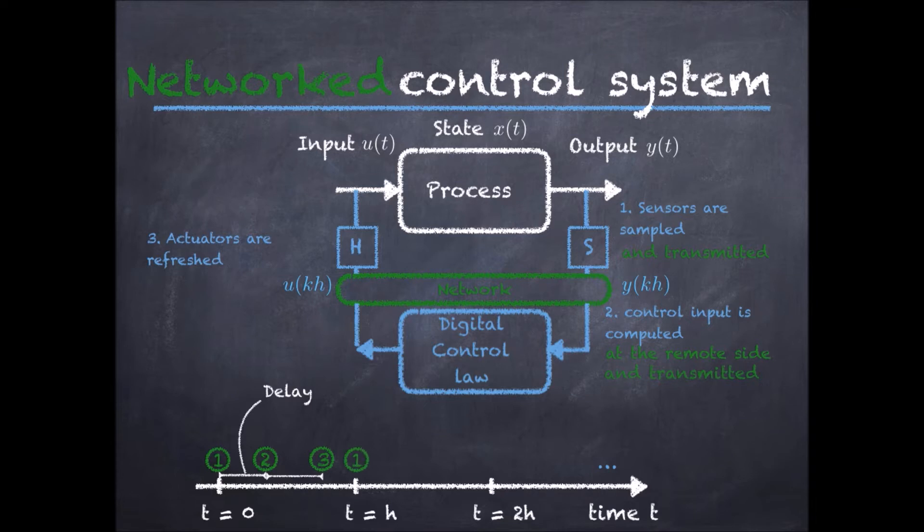Let's say that this happens at time h. So, the sensors are sampled, and after a communication delay, the control input is computed, and after another communication delay, the actuators are refreshed.